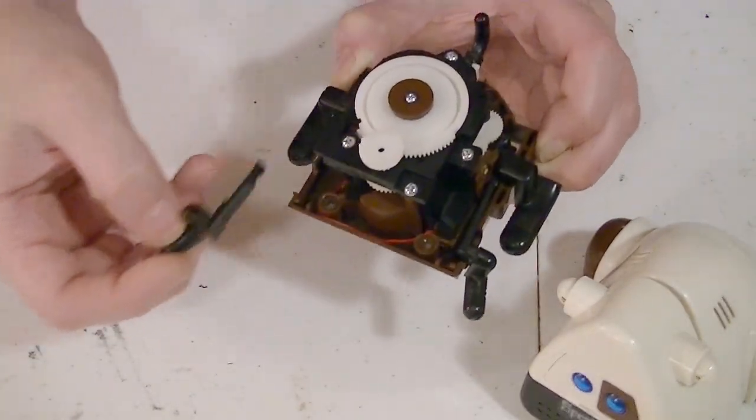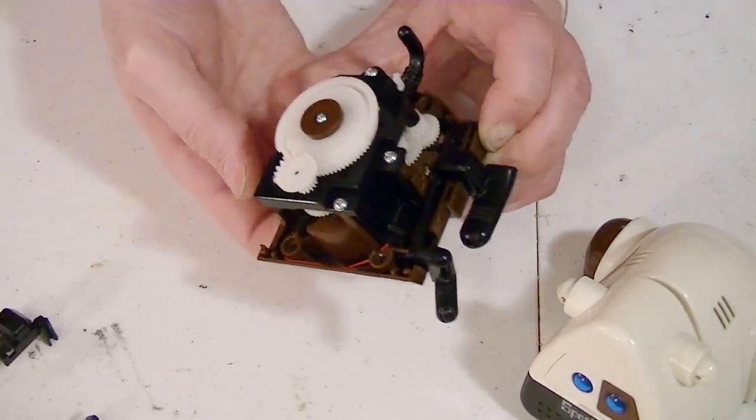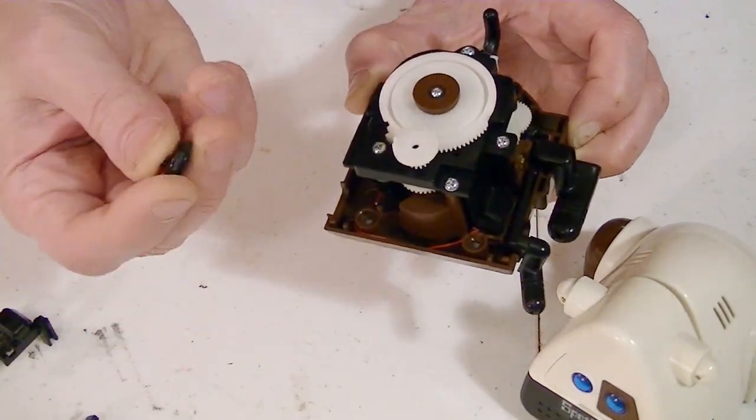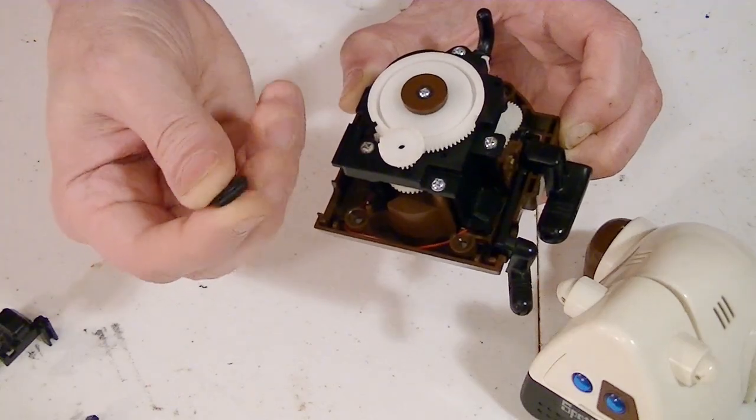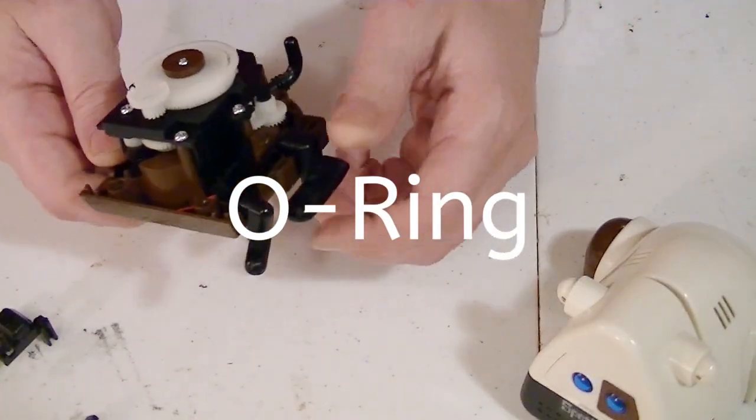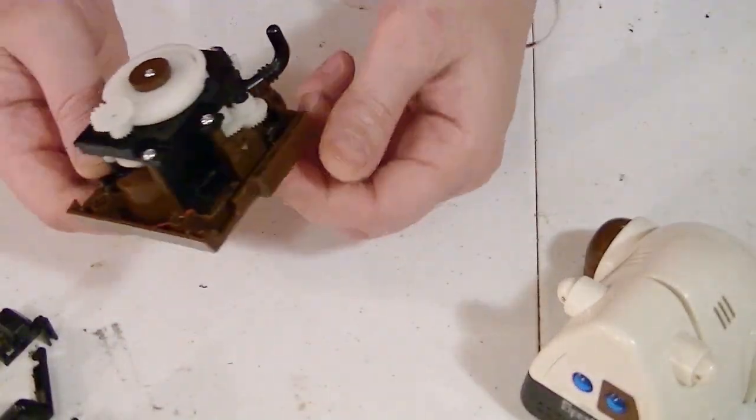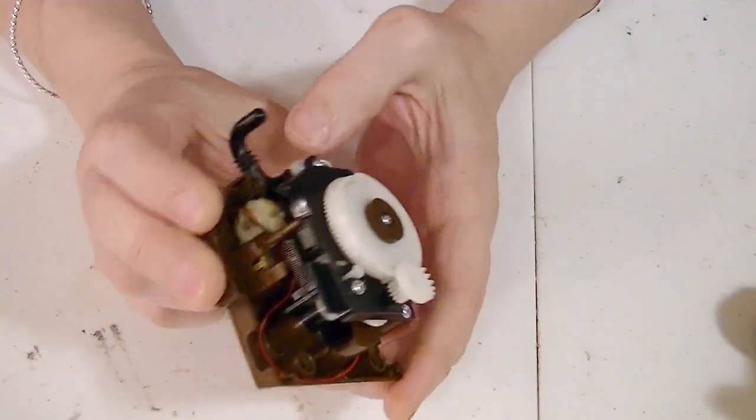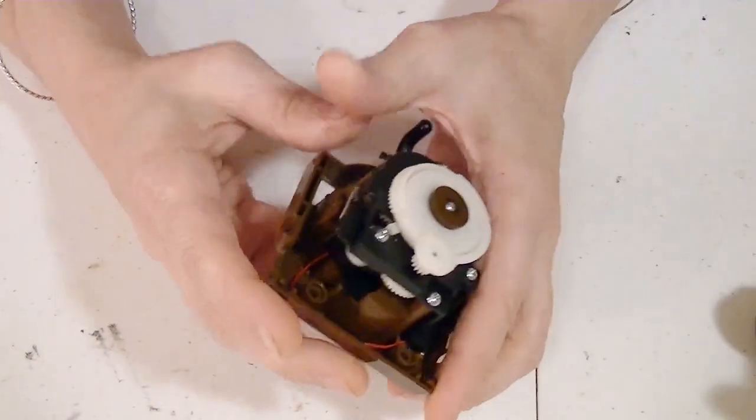The little legs come right off. The little tires where I replaced with O-rings. They slide off and come out, so let's give it a test here. Turn it on.